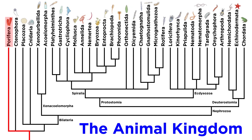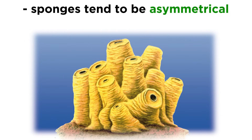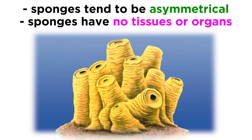Sponges are members of phylum Porifera. The name Porifera means pore-bearer, which is very fitting for sponges since they're full of pores, or ostia — tiny little holes that cover their bodies. Not only are sponges almost all asymmetrical, with just a few exhibiting radial symmetry, but their cells do not organize into tissues or organs.